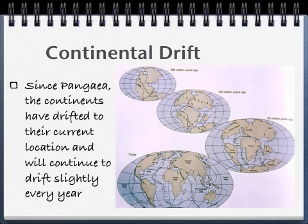Since Pangaea, the continents have drifted ever so slightly to their current location and will continue to drift slightly every year. Let's take a look at the image on the right. 200 million years ago we had Pangaea, but 135 million years ago we had two major continents: Laurasia and Gondwana. 65 million years ago the continents continued to move, and today they are in their current location.